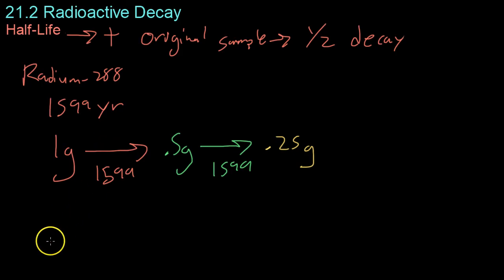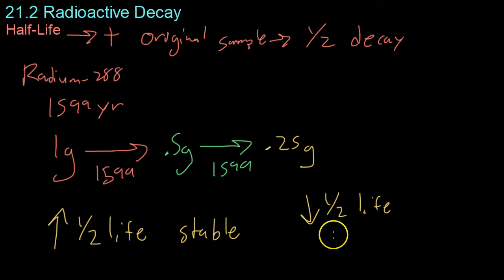It's important to realize that the greater the half-life, the more stable something is, because you're going to have less of it decaying in a shorter amount of time. Likewise, if you have a low half-life, you're going to have the vast majority of your atoms decaying very rapidly, so you're going to have a lot more emission.